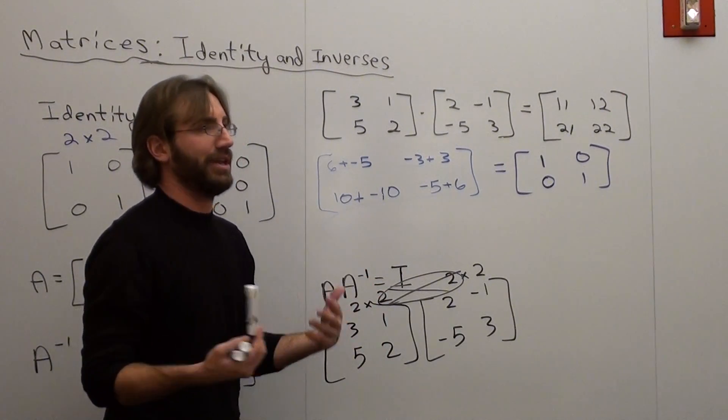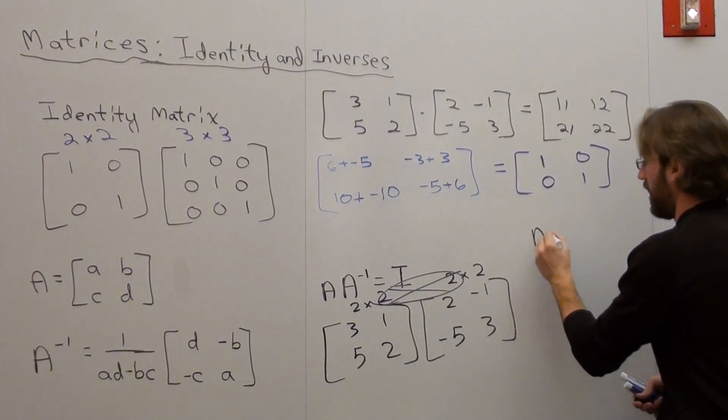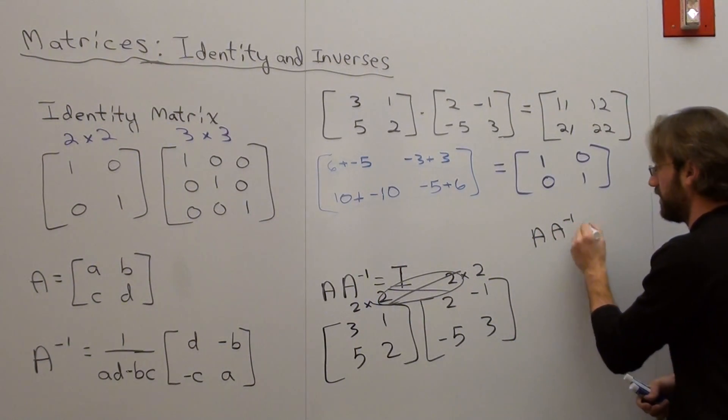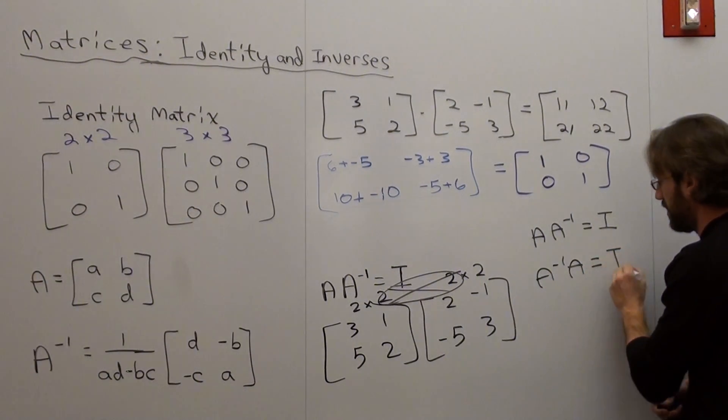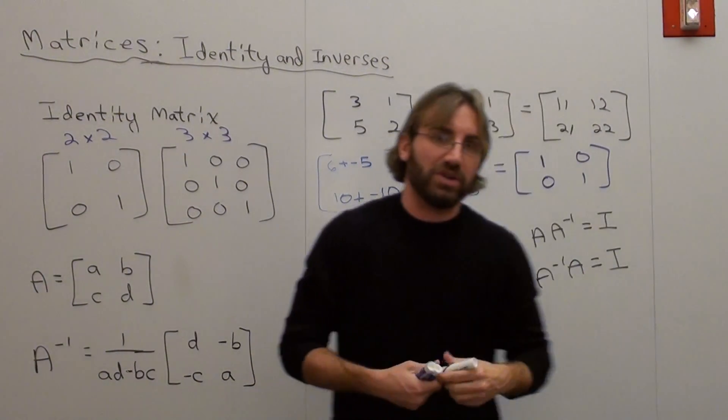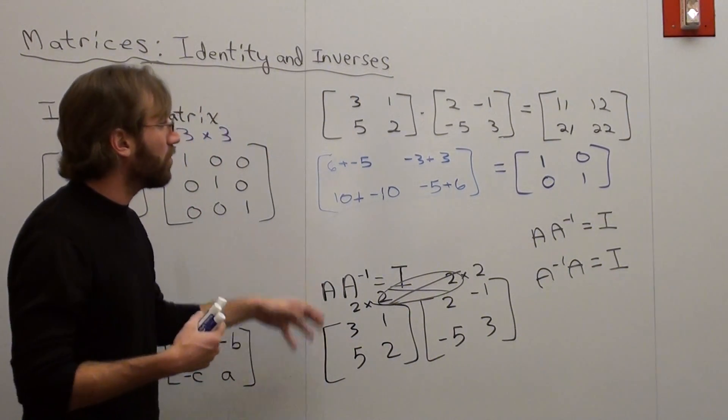And people ask, well, why does that work theoretically? Well, this is the reason why, theoretically. A times inverse equals identity, or inverse times A still equals identity. It's its inverse. So it's kind of the recipe that we have there. It's pretty cool.